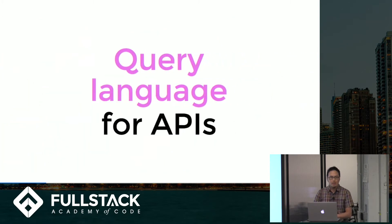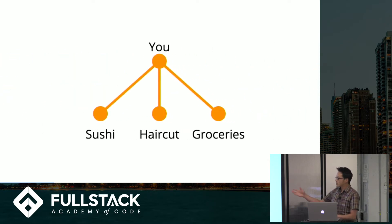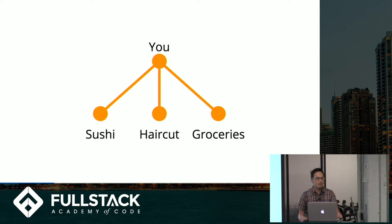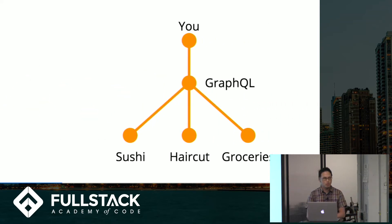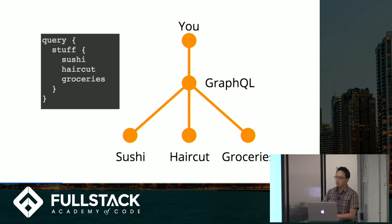So what is GraphQL? GraphQL is a query language for APIs. It allows you to handle complex queries and gives you the data output that you want exactly. So instead of having multiple dumb endpoints, you would have one smart endpoint that handles it all. A simple representation: if you want to go get sushi, get a haircut, or get some eggs, in REST you'd go to each of those endpoints separately. Whereas with GraphQL as your middleman, GraphQL handles the sushi, the haircut, and the groceries — whatever you wanted.